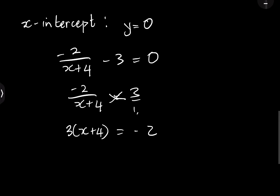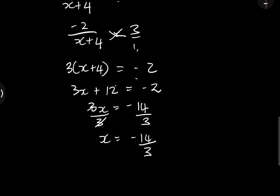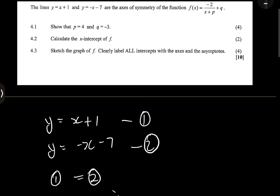So we have 3x + 12 = -2. Therefore 3x = -12 - 2 = -14. Dividing both sides by three, x = -14/3. I'll leave it in that format, so our x-intercept is -14/3.